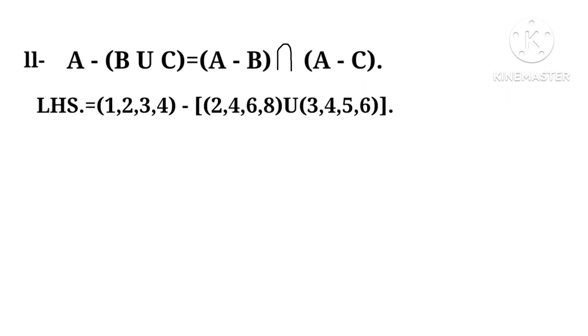Now we take up the second part. A minus B union C equals A minus B intersection A minus C. Putting values in the LHS equals 1, 2, 3, 4 minus 2, 4, 6, 8 union 3, 4, 5, 6 equals 1, 2, 3, 4 minus 2, 3, 4, 5, 6 equals 1.